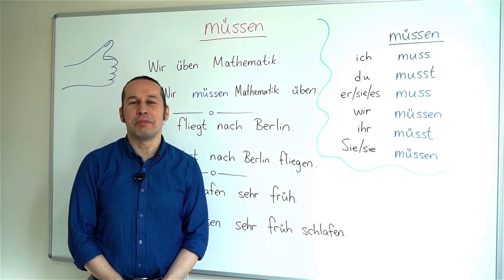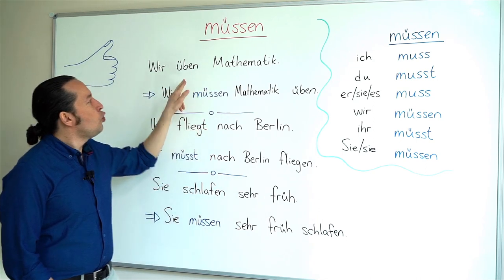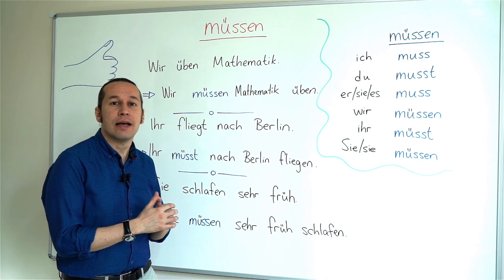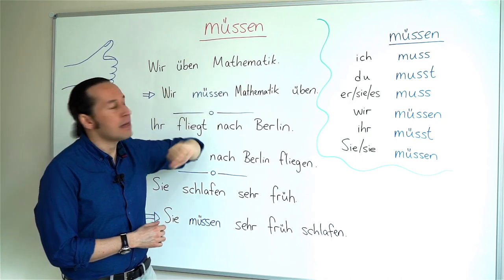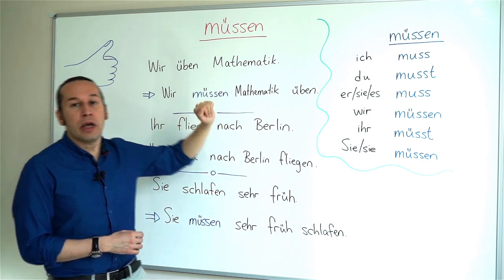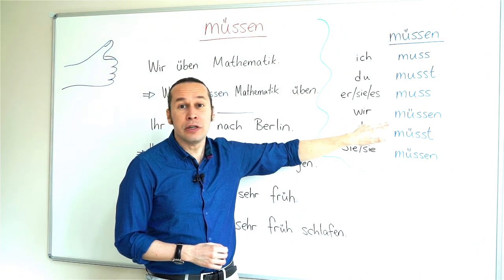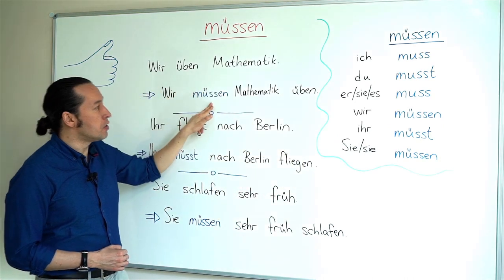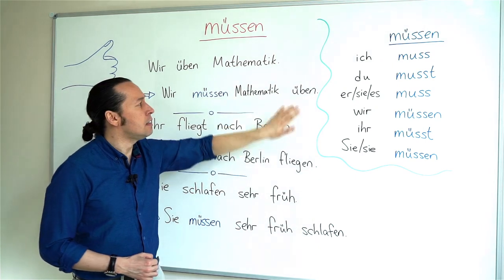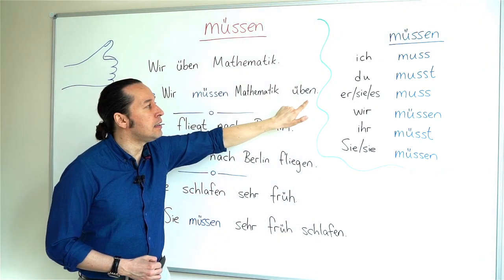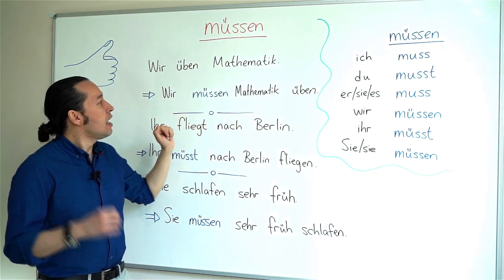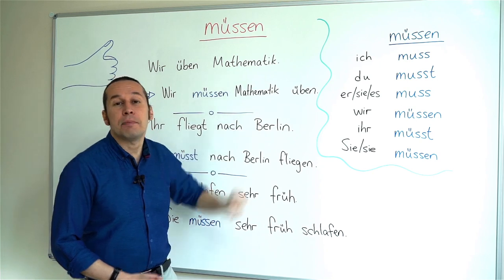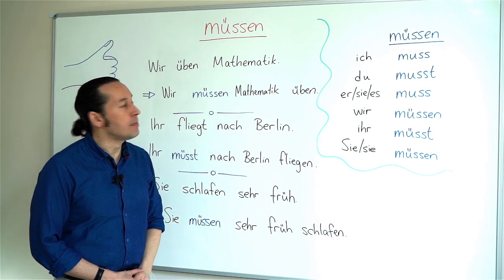Now let's look at the following examples. Wir üben Mathematik. Üben stands for 'to work on' or 'to exercise,' so 'we are exercising mathematics.' If I add müssen, the conjugation for wir is wir müssen — it stays the same. The infinitive üben goes to the end: wir müssen Mathematik üben — 'we must exercise mathematics.'